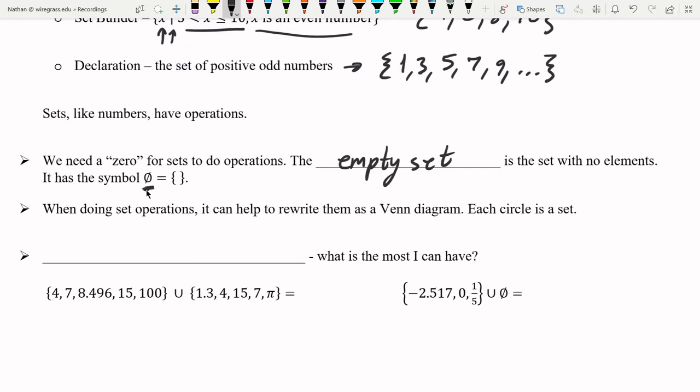It's just a set with no elements. It's written with a zero with a line through it, or as two curly braces with no elements inside of the set.